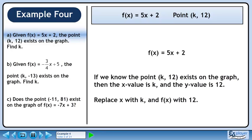If we know the point (k, 12) exists on the graph, then the x-value is k and the y-value is 12. Replace x with k and f(x) with 12.